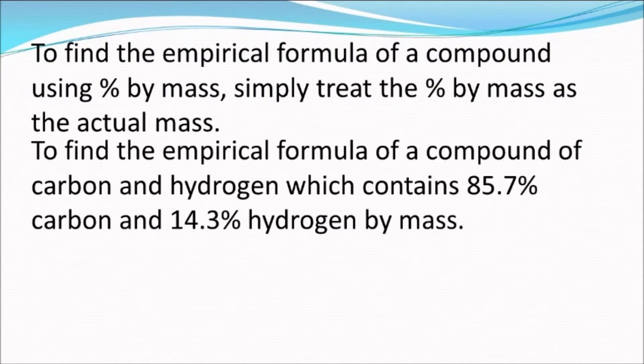To find the empirical formula of a compound using percentage by mass, we simply treat percentage by mass of each element as the actual mass. For example, we want to find the empirical formula of a compound of carbon and hydrogen which contains 85.7 percent carbon and 14.3 percent hydrogen.